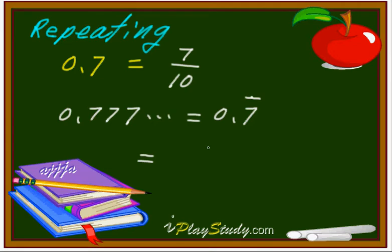Repeating decimal, little bit different. Instead of divide by 10, this one's one digit repeating. That's why you just put one 7 right there. Just one digit. Then that's right, so you're going to use 9.